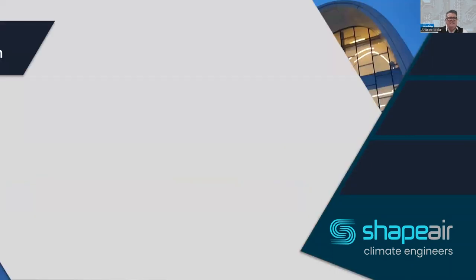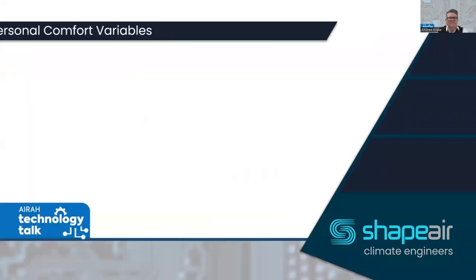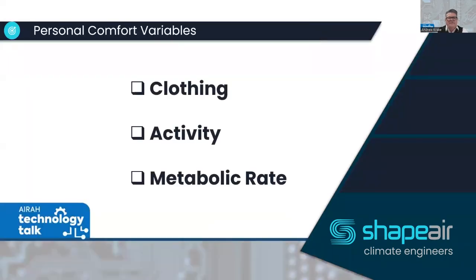There are a number of variables to this. We produce and lose heat through conduction, convection, radiation, and evaporation. We also have personal variables that generally we can't control: the person's clothing, their activity, and their metabolic rate.